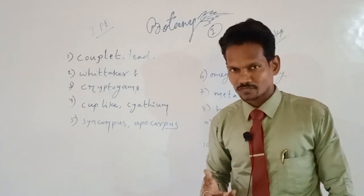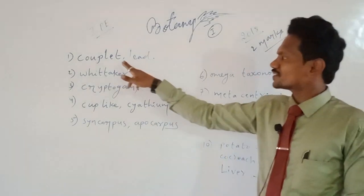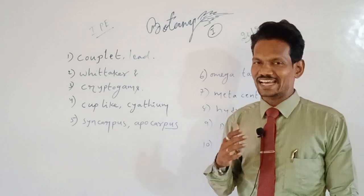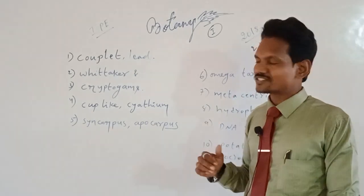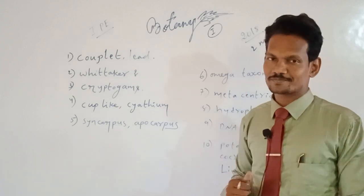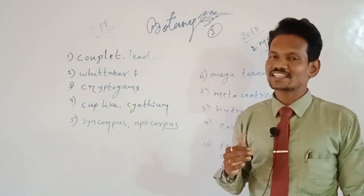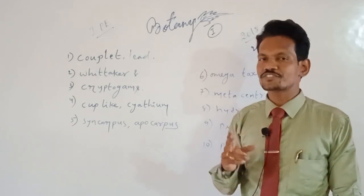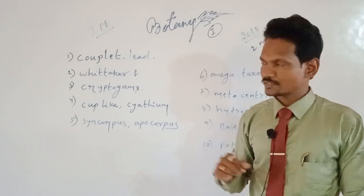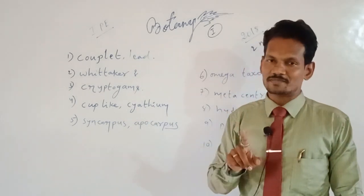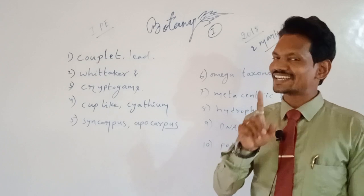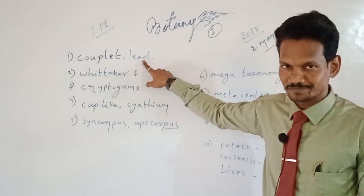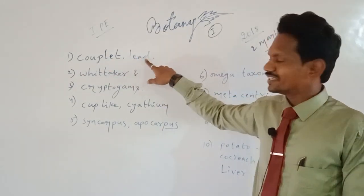First question: what is meant by couplet and lead? A couplet means two statements or two characteristic features together, known as a couplet. A couplet is also known as a key. A single statement or single characteristic feature within a couplet is known as a lead. So: couplet means double, lead means single.